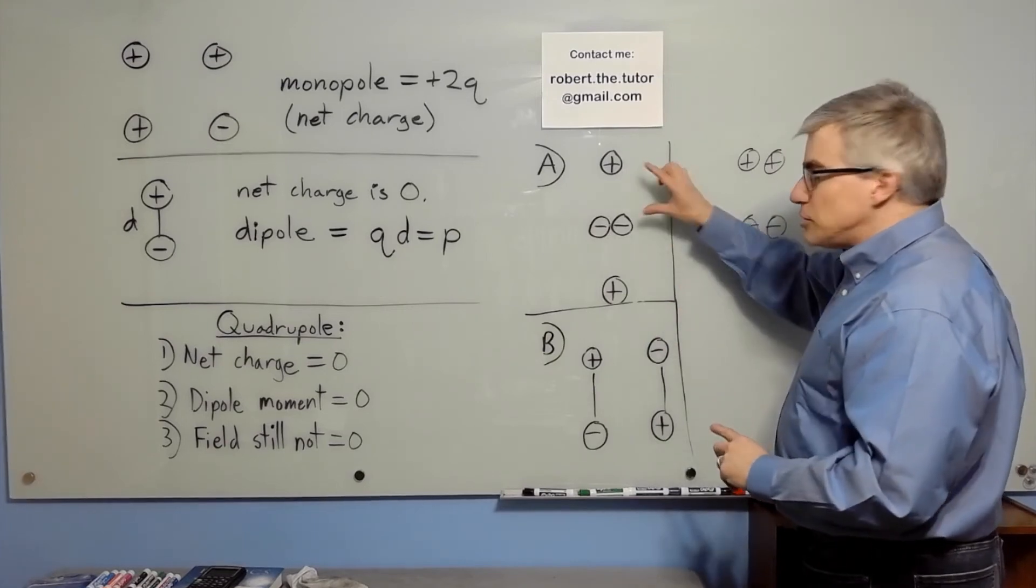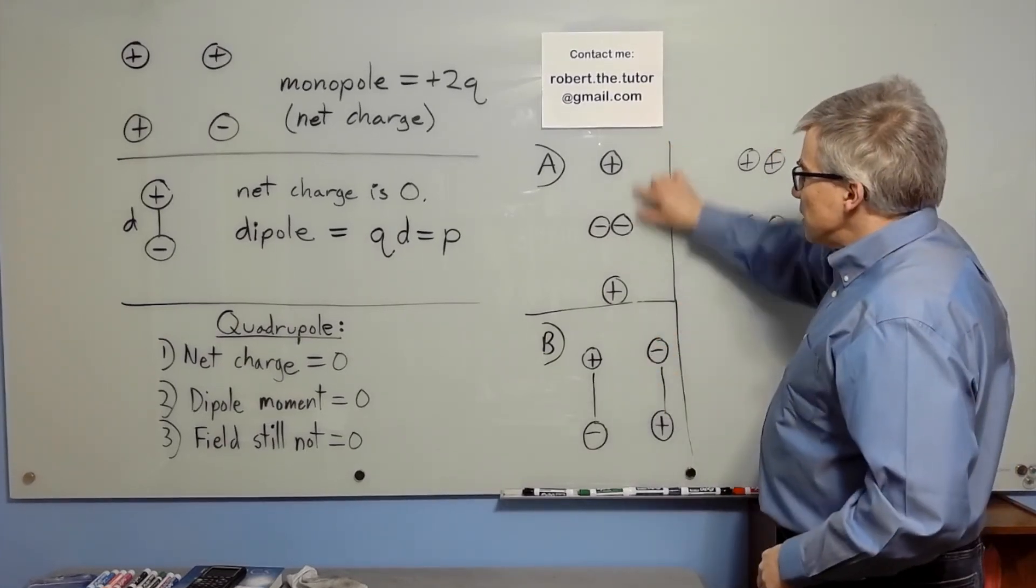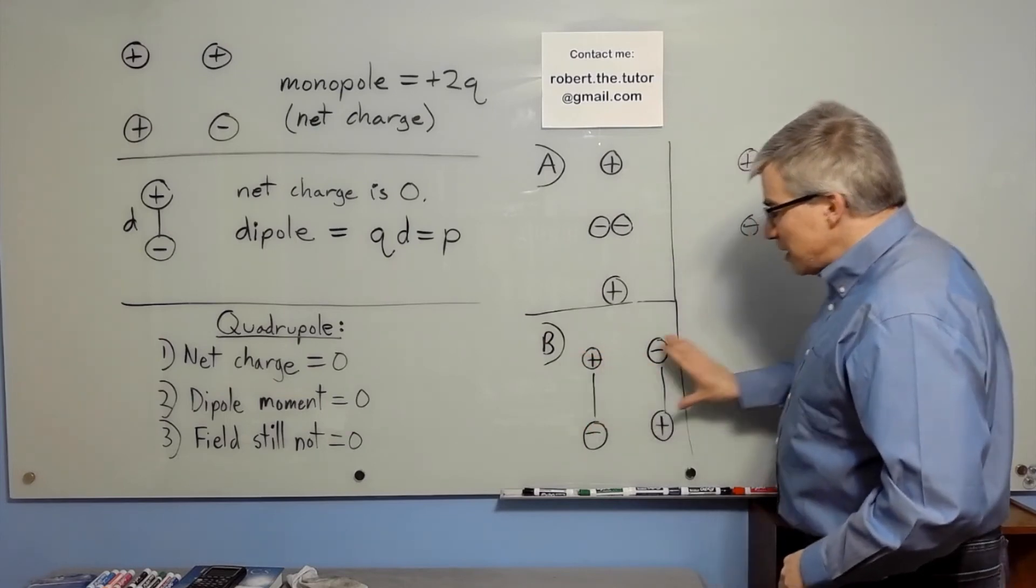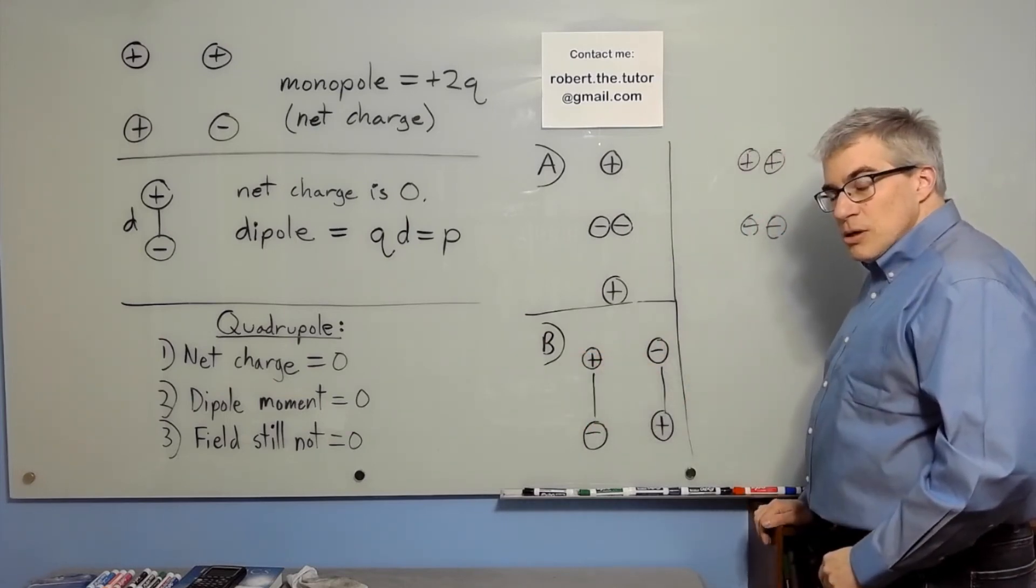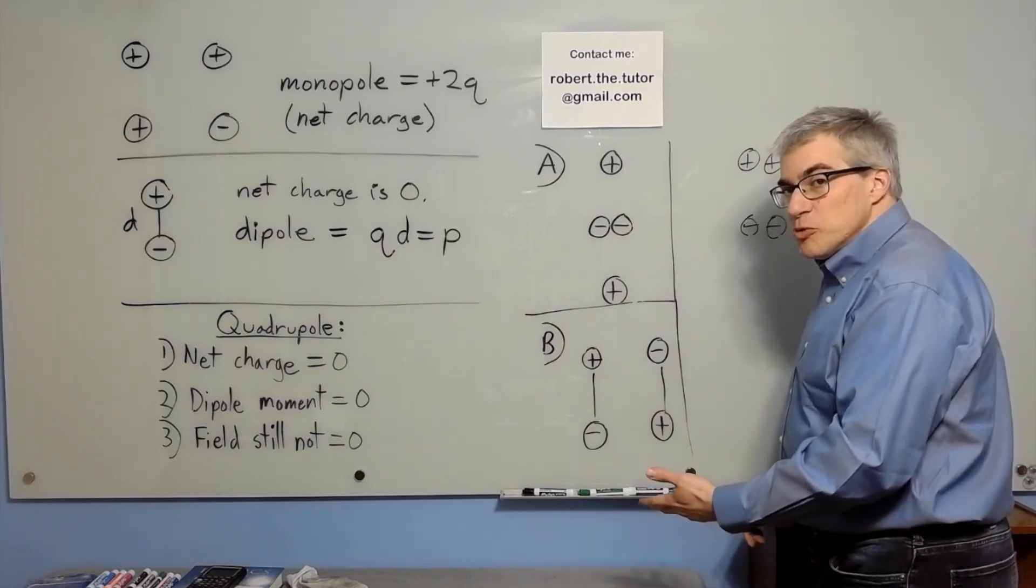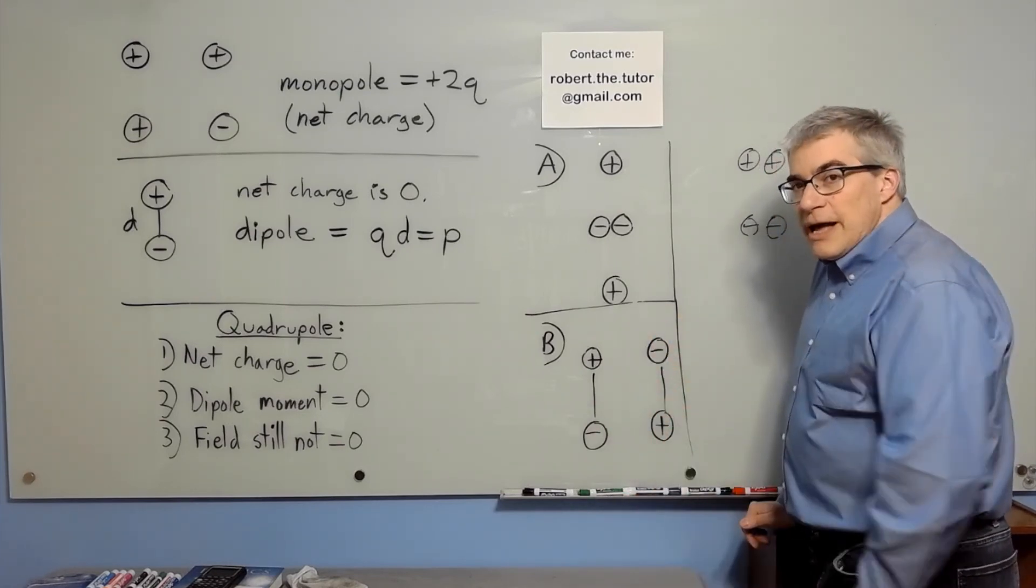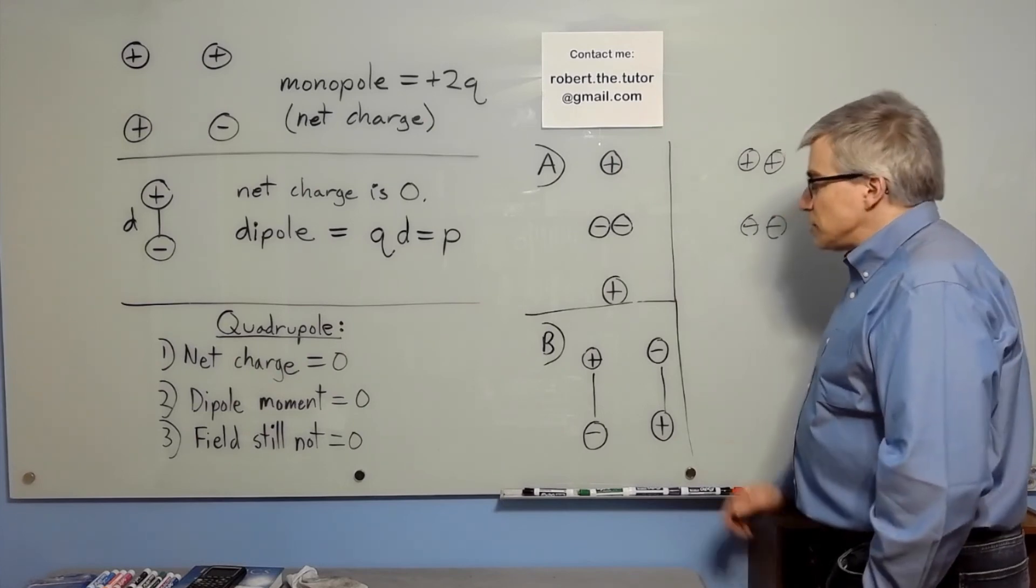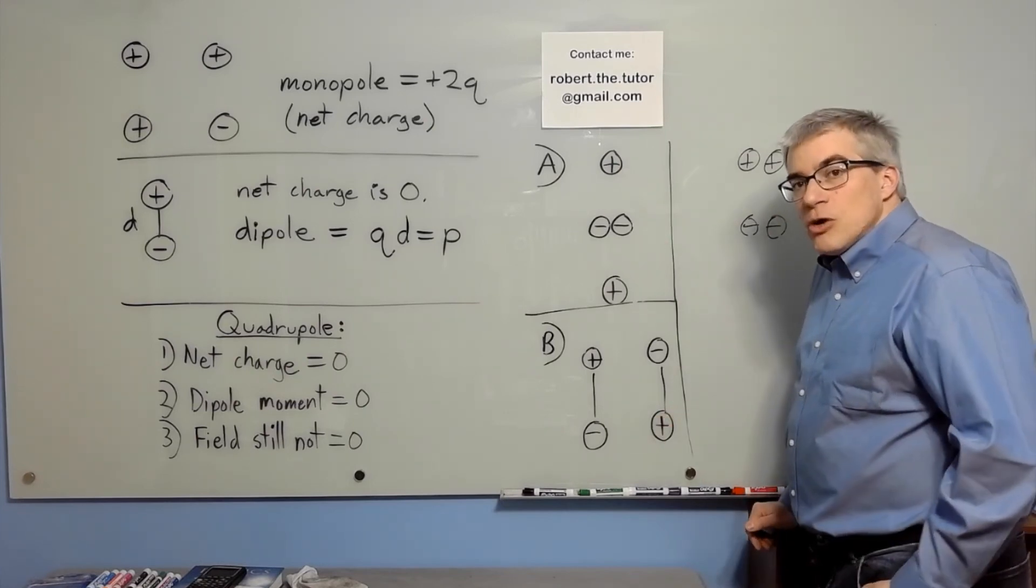And they need to have some slight separation. They can have a linear separation like this or a sideways separation. But so long as the two dipoles point exactly opposite, the dipole moment will be zero, the charge will be zero, and you will still have a field. And so those are examples of electric quadrupoles.